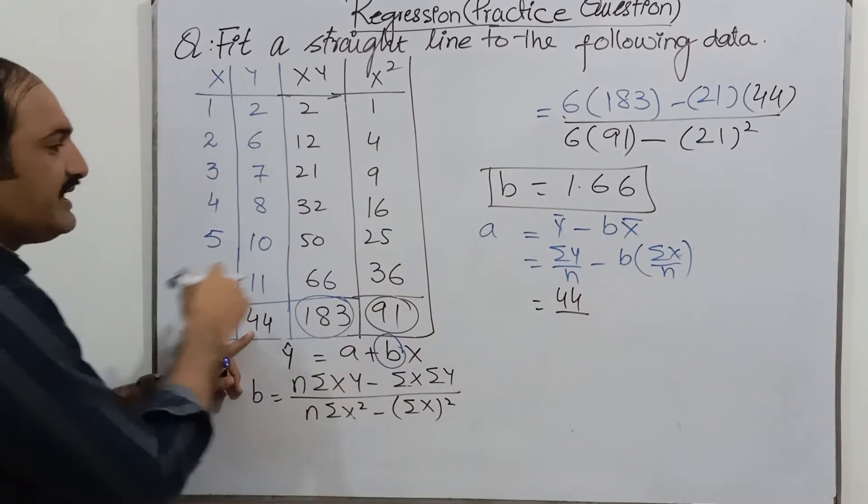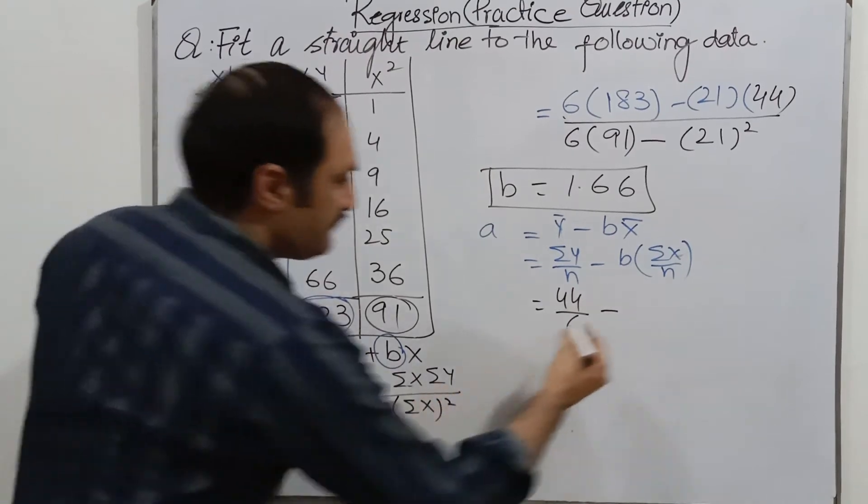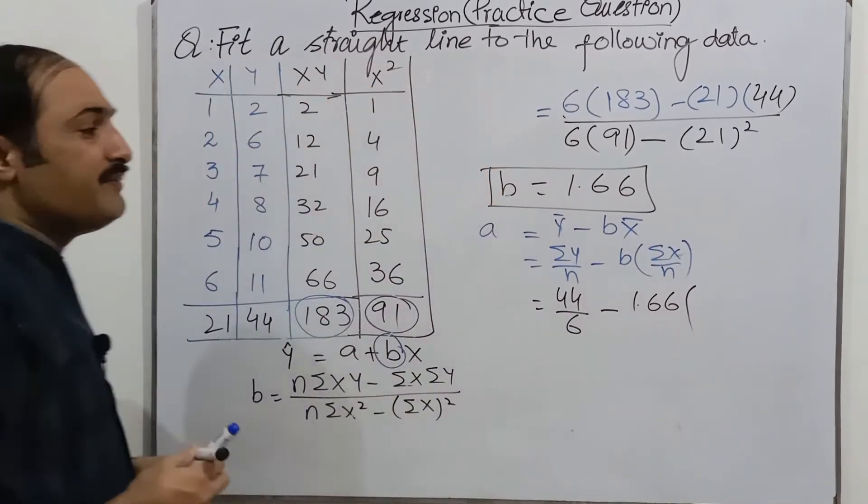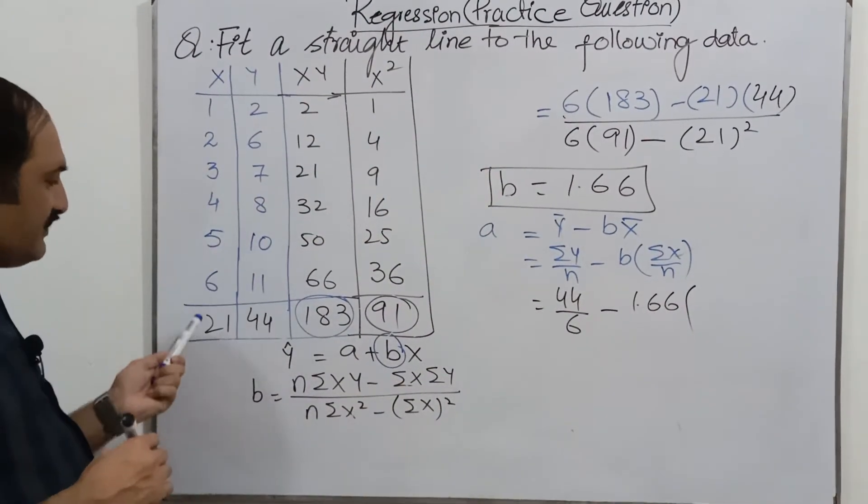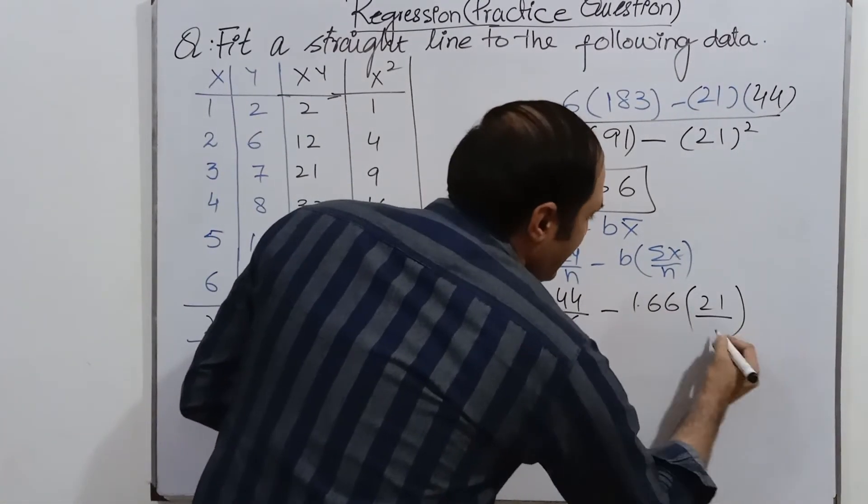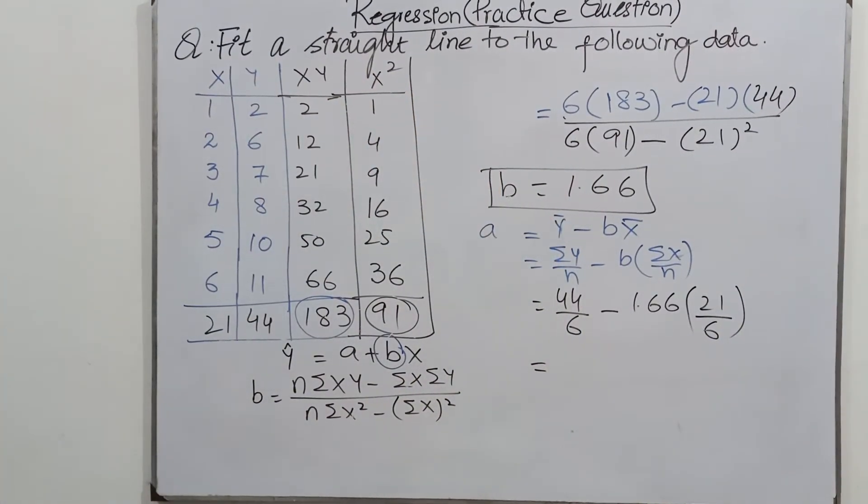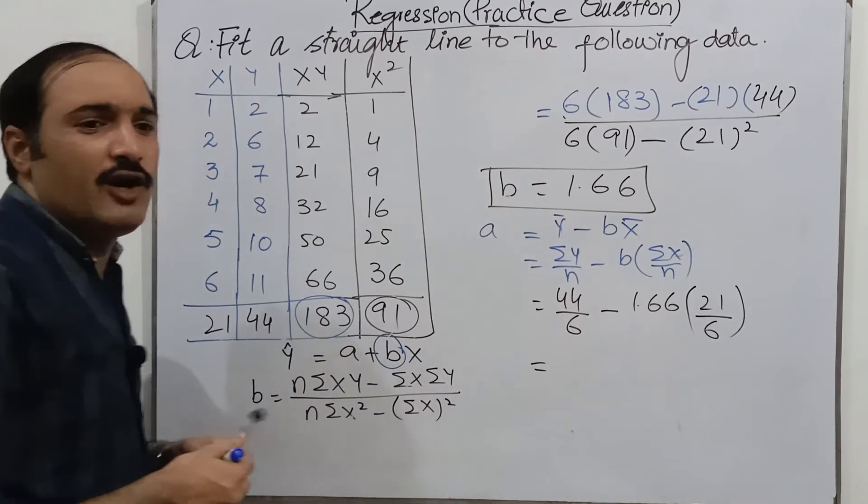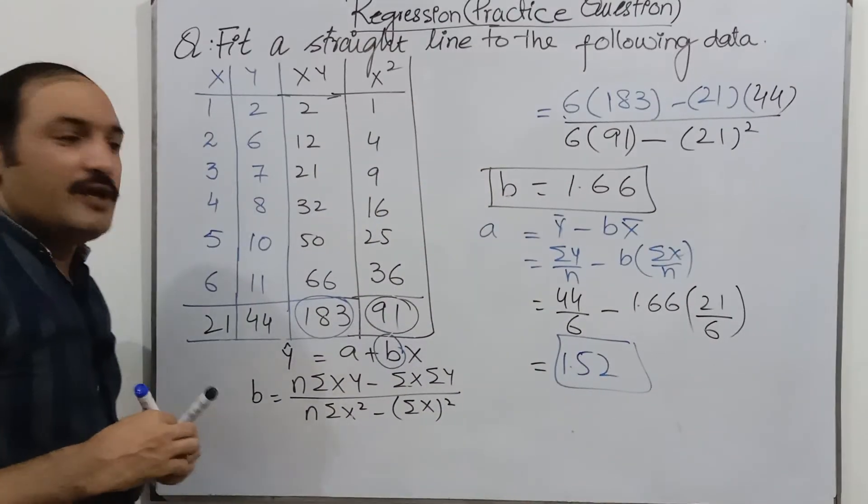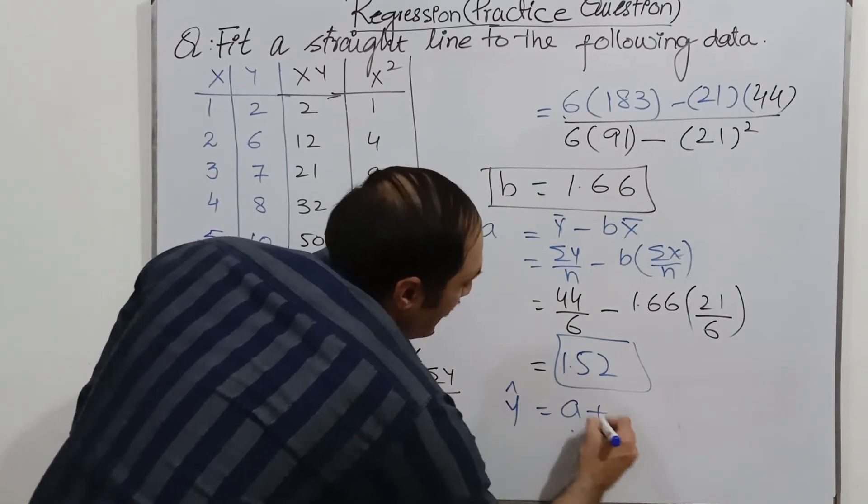over N is 6 minus B is 1.66, where is B? This is B, 1.66 into summation X is sum of summation X is 21, 21 over N is 6, and N is 6. And now its answer is 1.52.